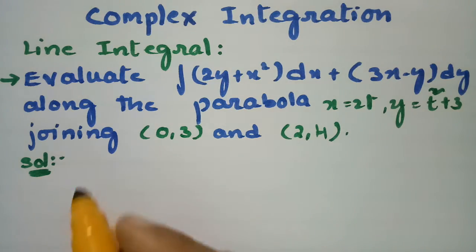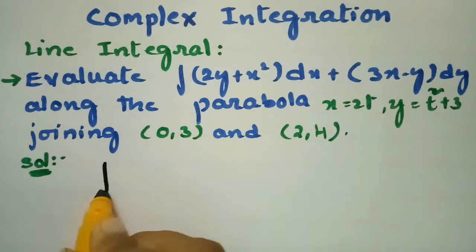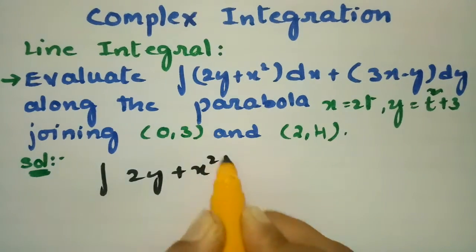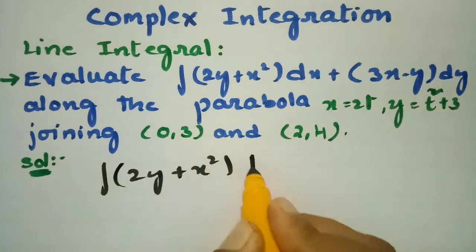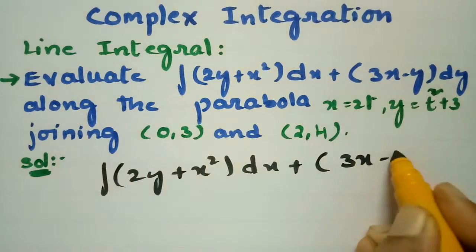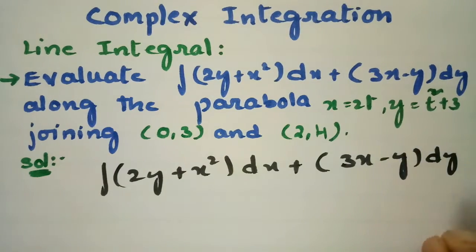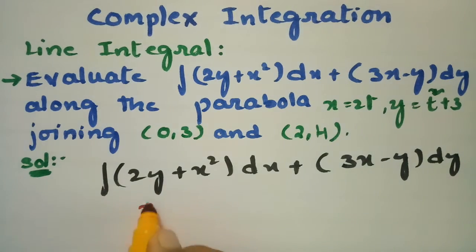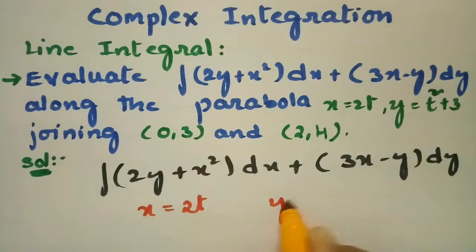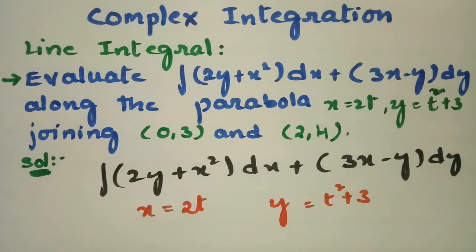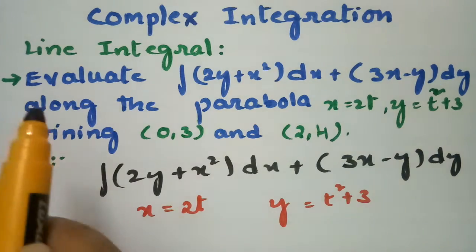The line integral to be solved is the integral of (2y + x²)dx + (3x - y)dy along the parabola. The parabola is given by x = 2t and y = t² + 3. So we have to use this line integral and transform it in terms of the parameter t.